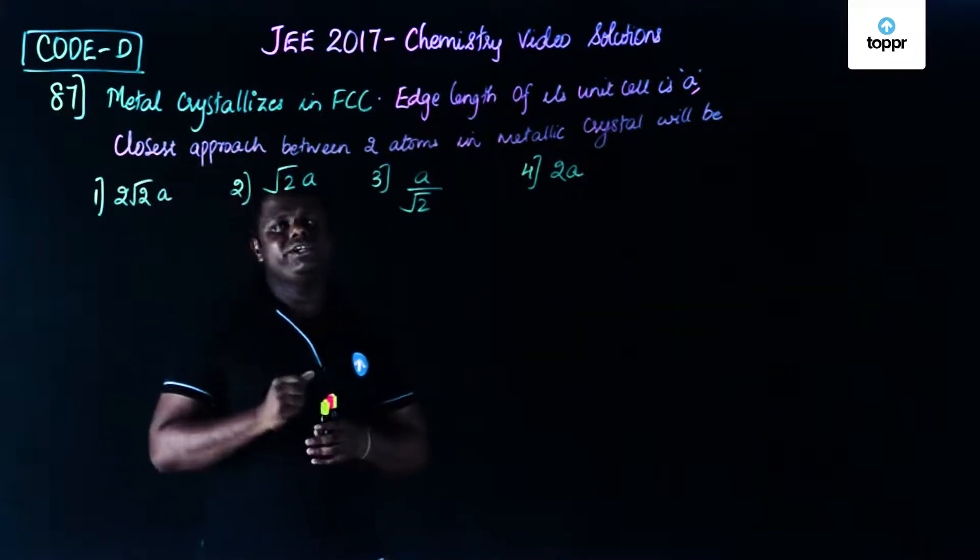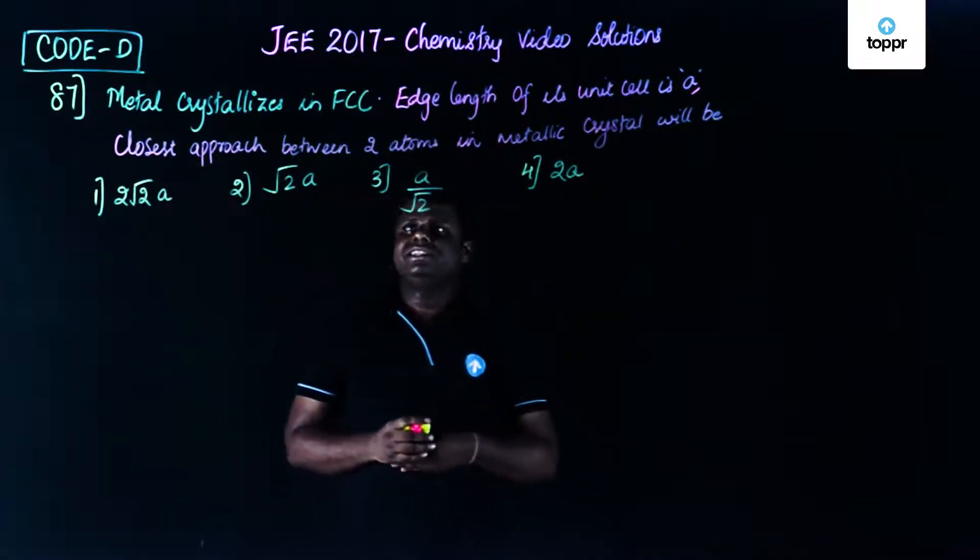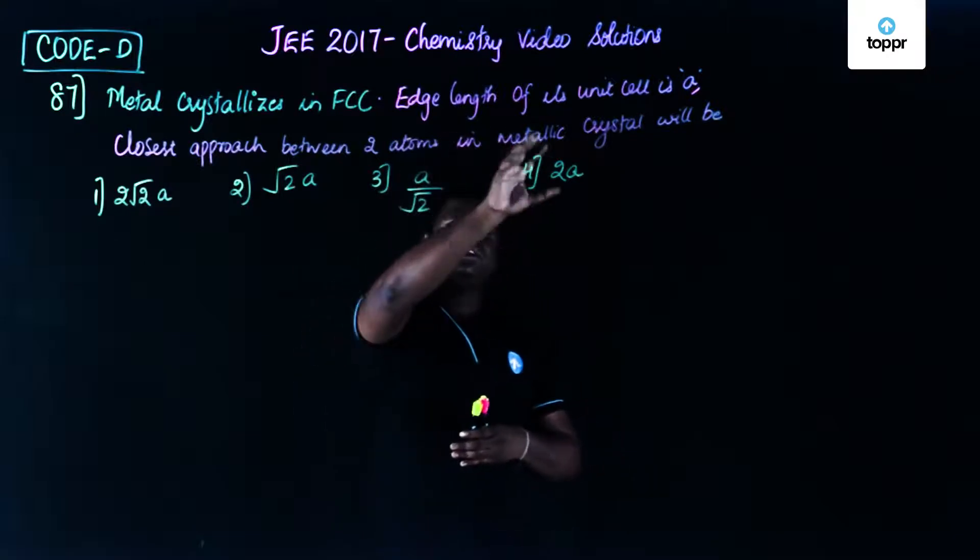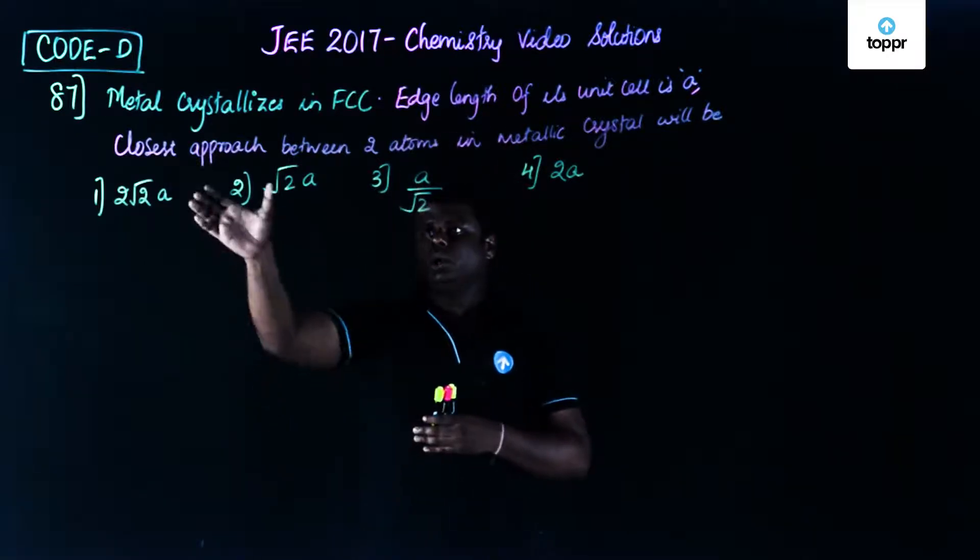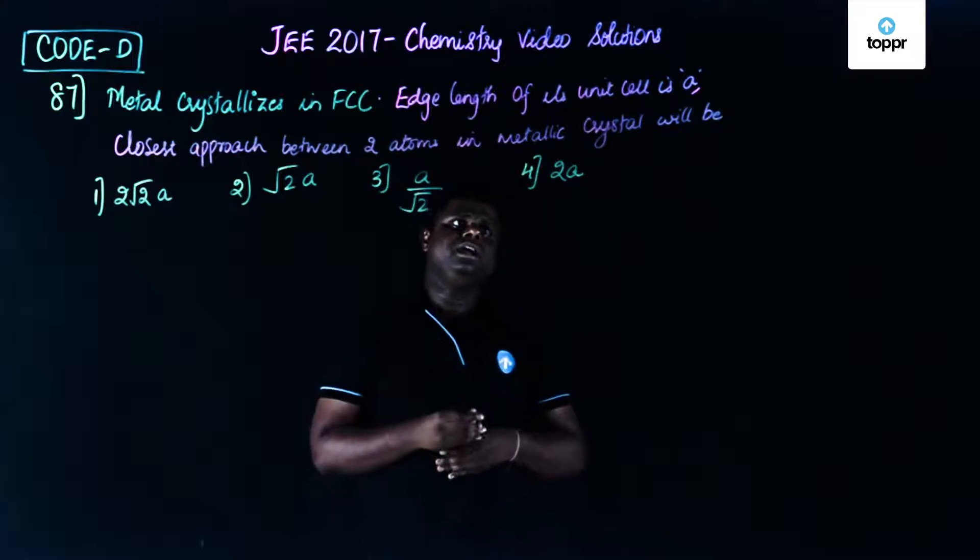Now in this case, the question states: metal crystallizes in face-centered cube, the edge length of its unit cell is A. The closest approach between two atoms in metallic crystal would be?